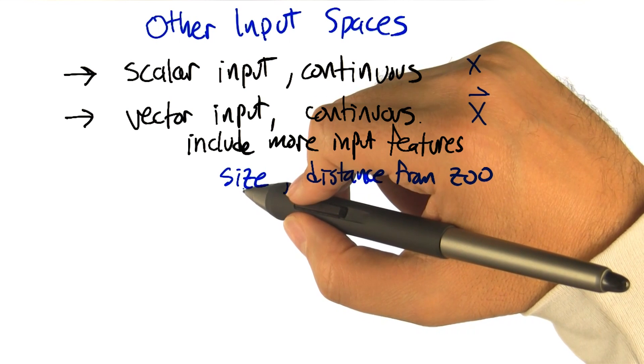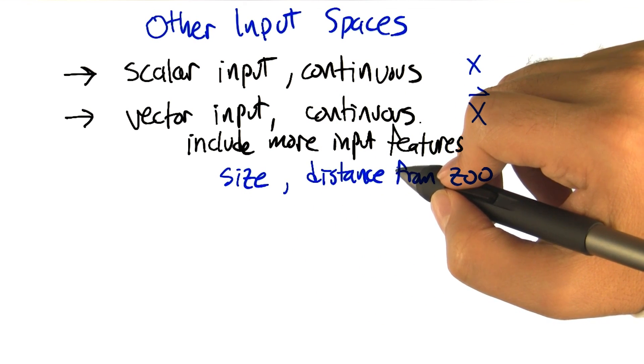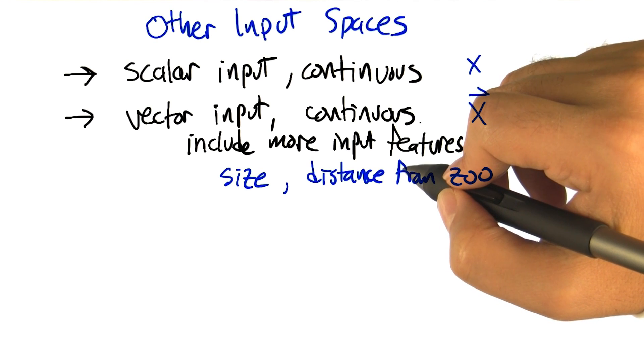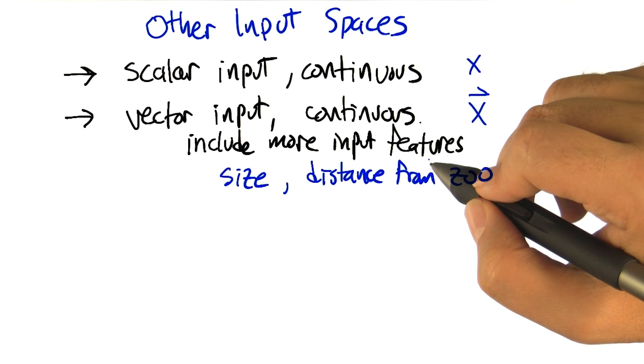The size, which we've been looking at already. But also let's say the distance to the nearest zoo. We think that that's a really important thing. People like to live close to the zoo. Probably not too close to the zoo. But let's imagine that it's like size, something that actually, or actually let's do it the other way.